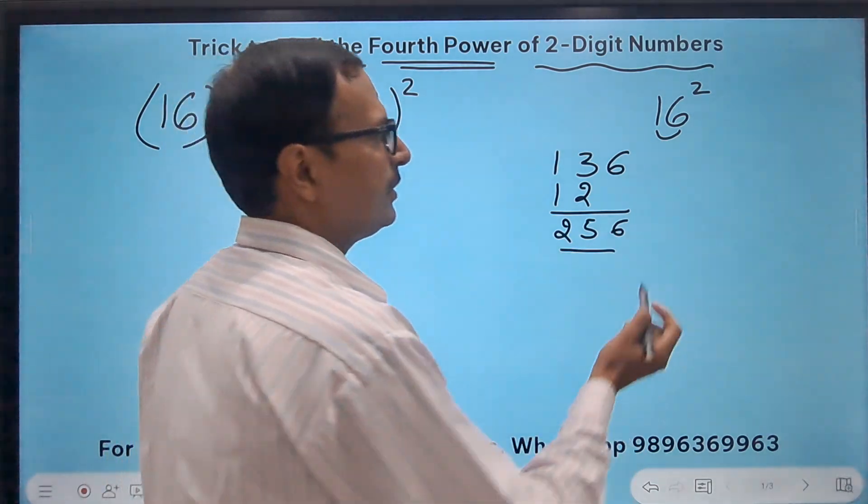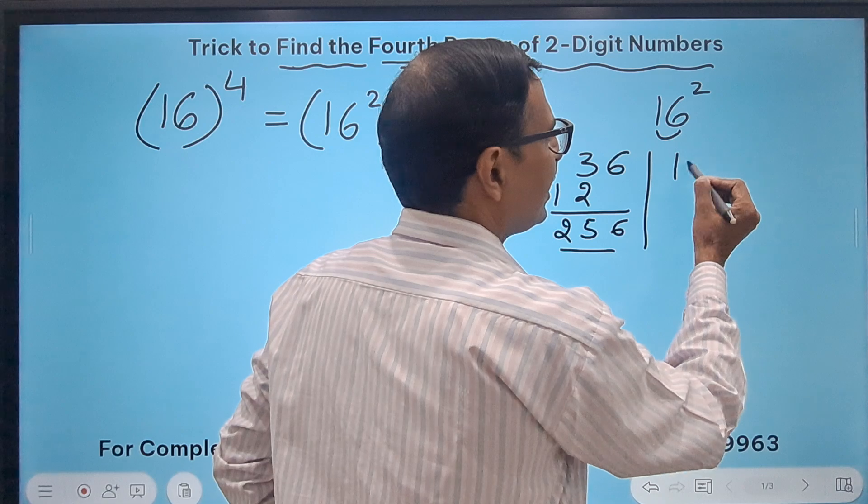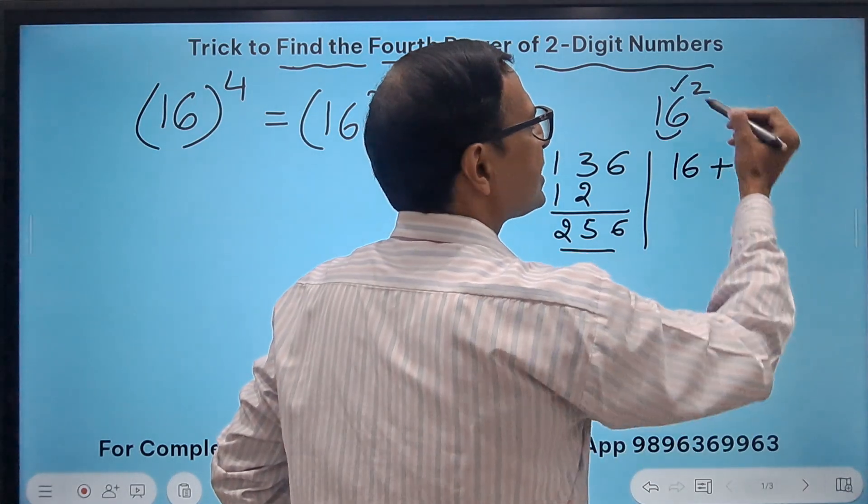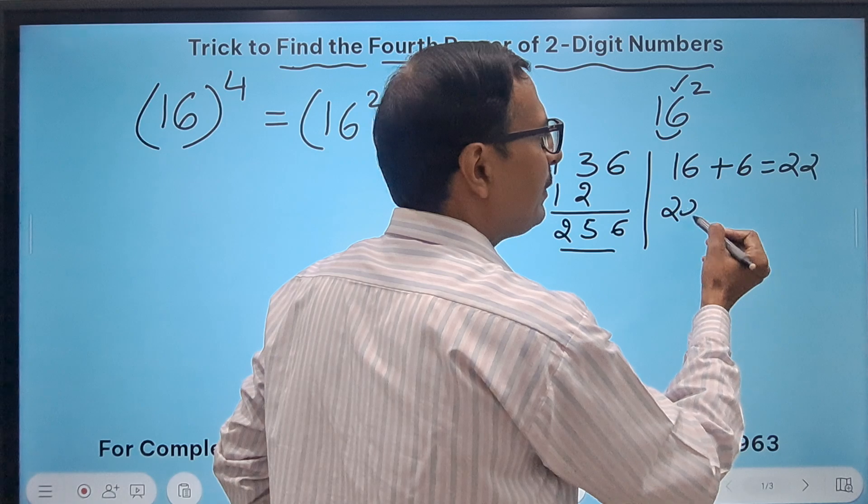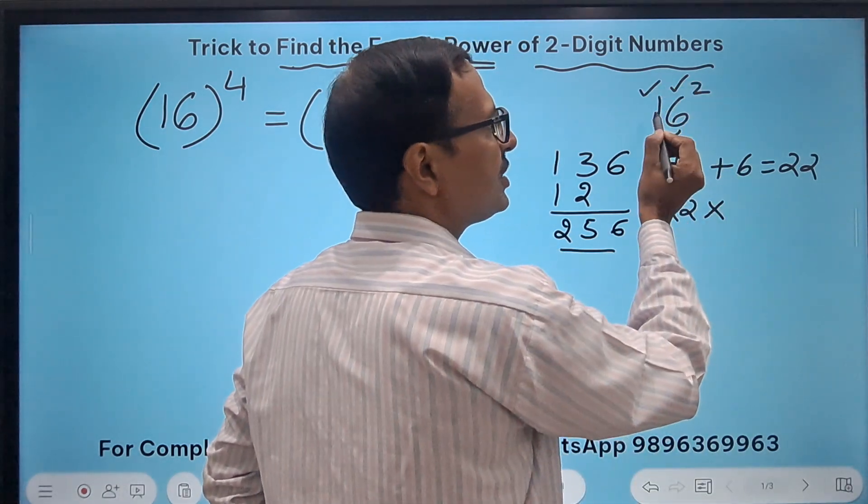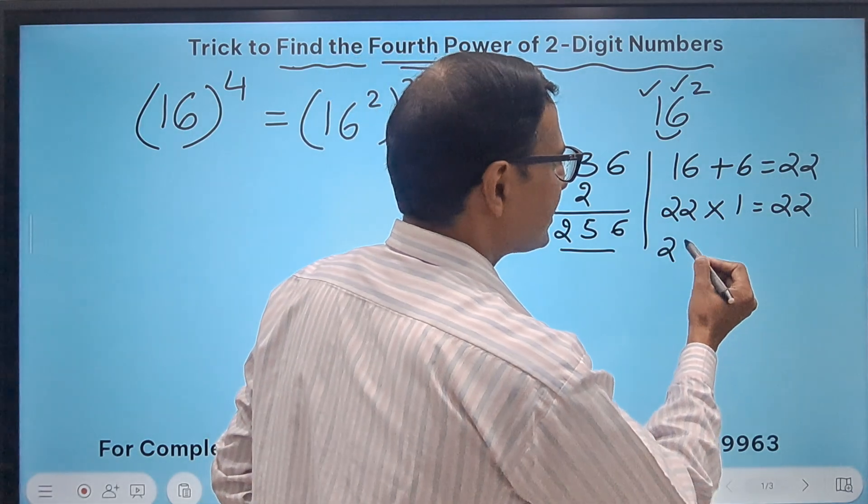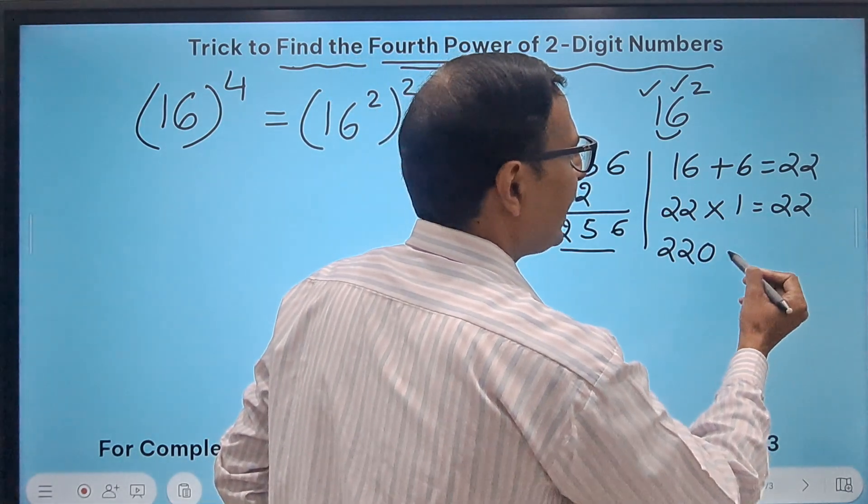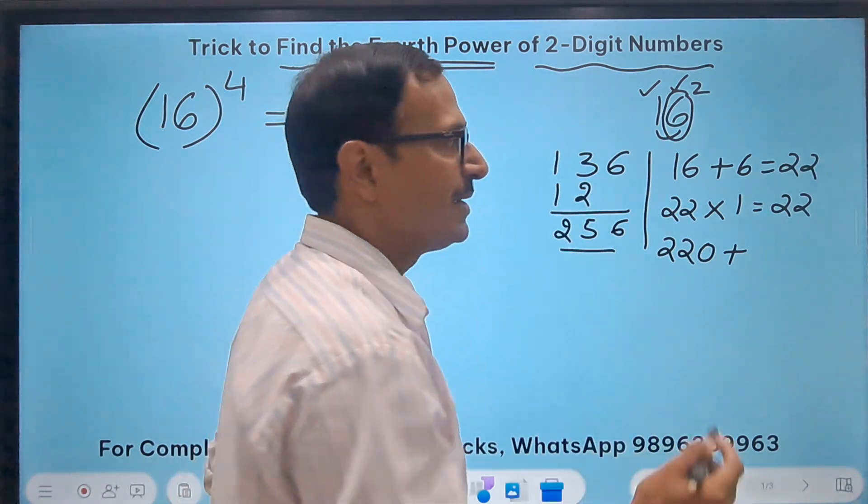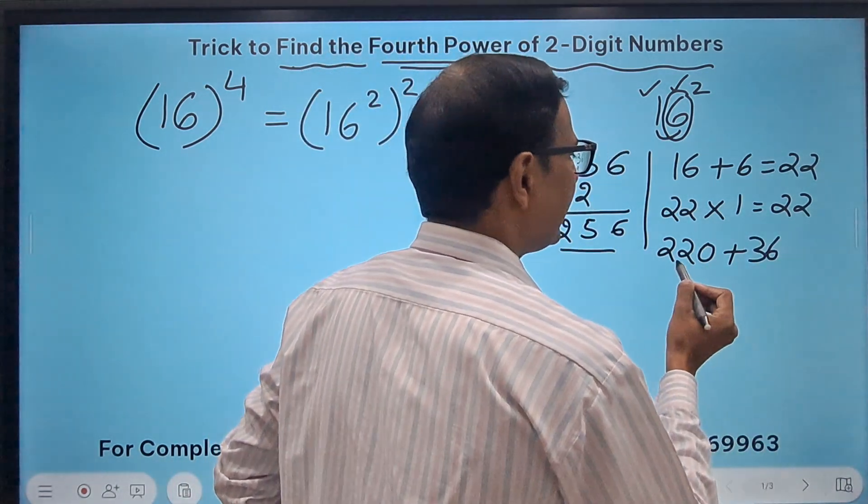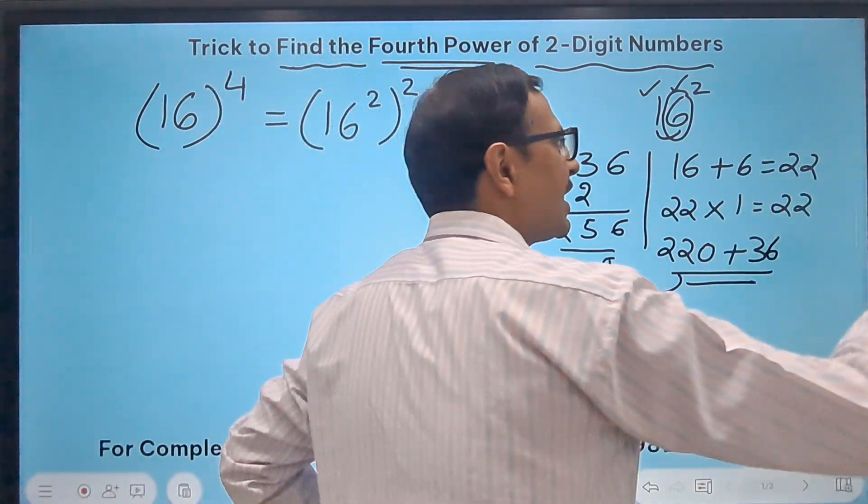Now this is one method, which is the identity method a plus b whole square. The other method: first the number 16, I will add the unit digit 6 to this, so I get 22, and then 22 will be multiplied by the first digit 1, so that is 22 only in this case. Just put a 0 with this 22 and add the unit digit square, 6 square is 36, and you get the same answer 256.